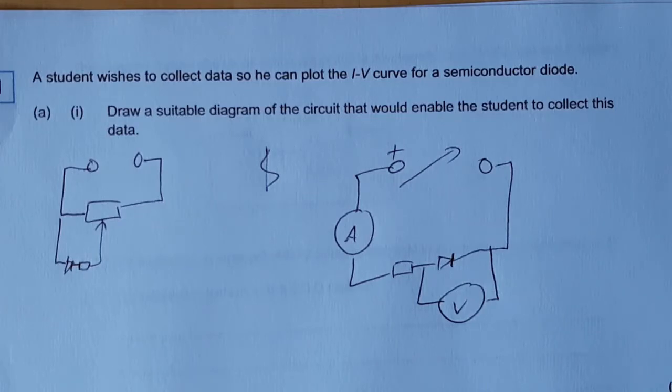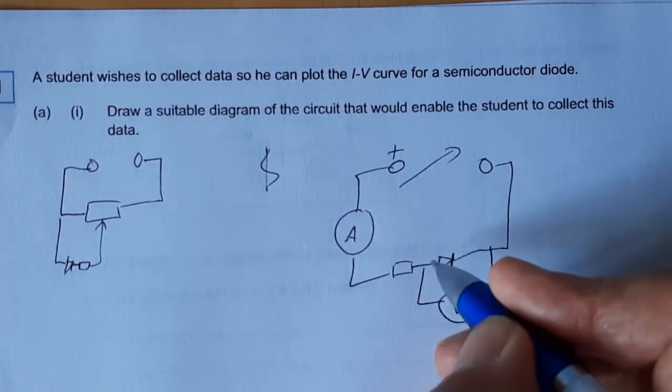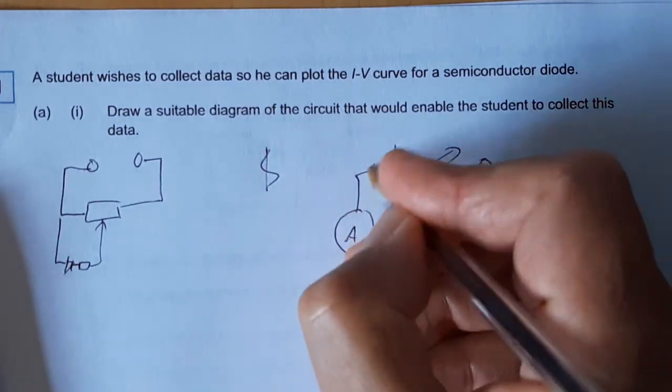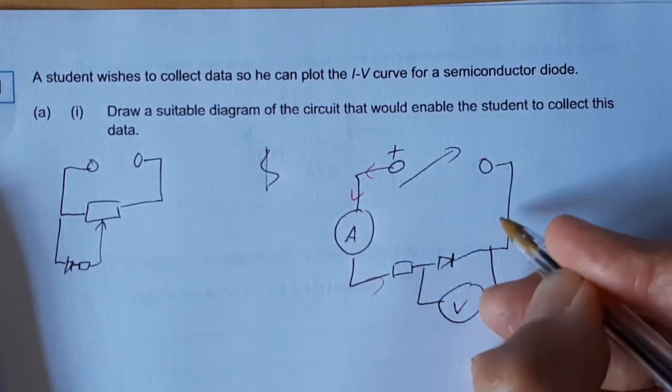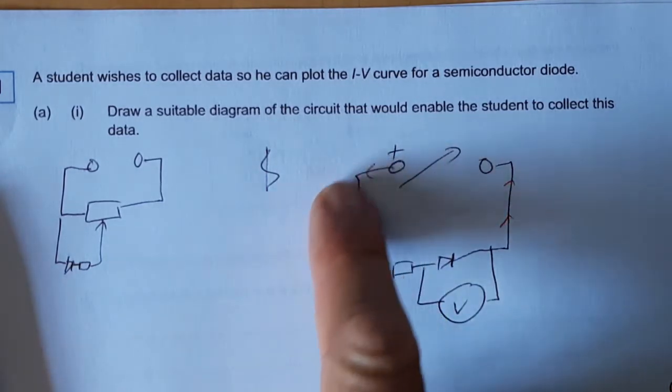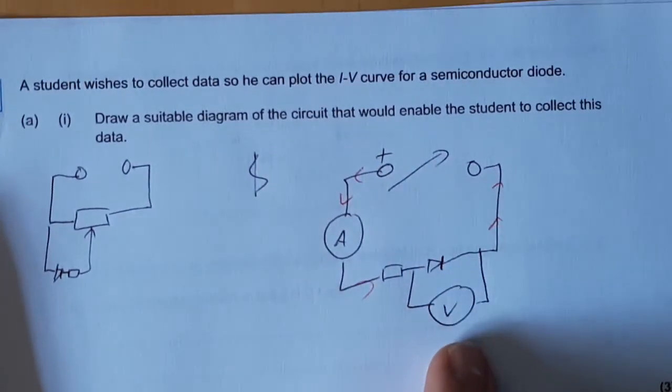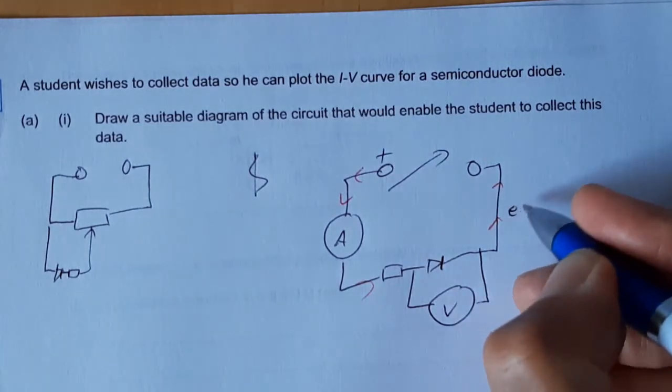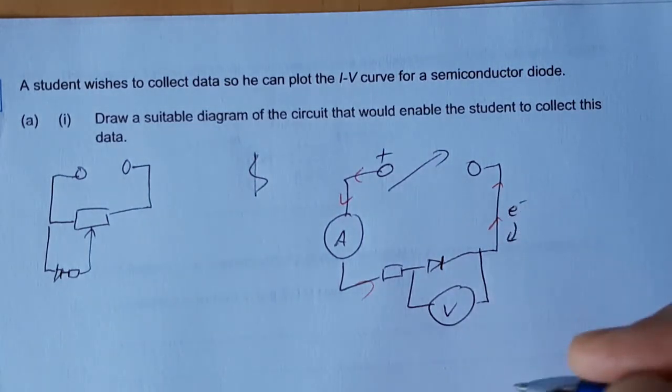We would say current conventionally flows from the positive to the negative terminal. So whenever you're asked for the direction of the current, that's always the direction we give. Now you might remember that the electrons inside are actually going the other way. Usually we can ignore that.